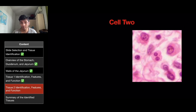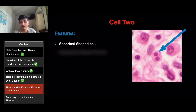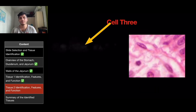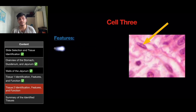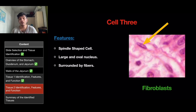Cell two is spherically shaped, with a segmented and bilobed nucleus and many granules present, fitting the description of eosinophils. Cell three is spindle-shaped with a large ovoid nucleus and is surrounded by fibers, fitting the description of fibroblasts.